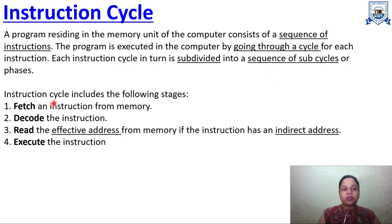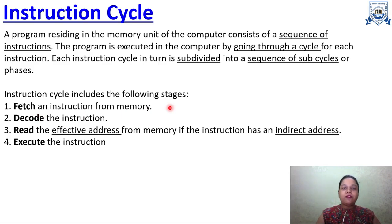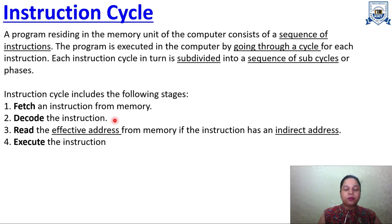Every instruction cycle includes the following stages. First is Fetch — fetch an instruction from the memory. When you give an instruction to the computer, first it has to be fetched to determine what instruction must be executed. Second is Decode — the computer has to understand what the instruction is, and for that it has to decode the instruction.